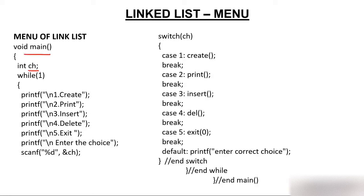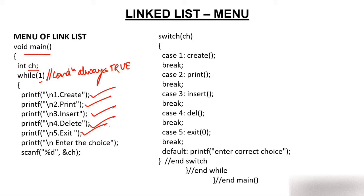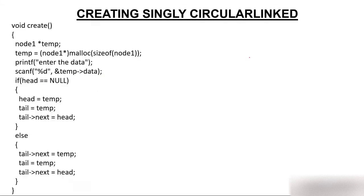In the main function I have created a variable 'ch'. While(1) means the condition is always true — this while loop is not going to stop, because anything other than 0 is always true. You have: 1-create, 2-print, 3-insert, 4-delete, 5-exit. You enter your choice. If you press 1, ch has value 1, switch jumps to case 1, and case 1 calls the create function — so we simply jump to the create function.